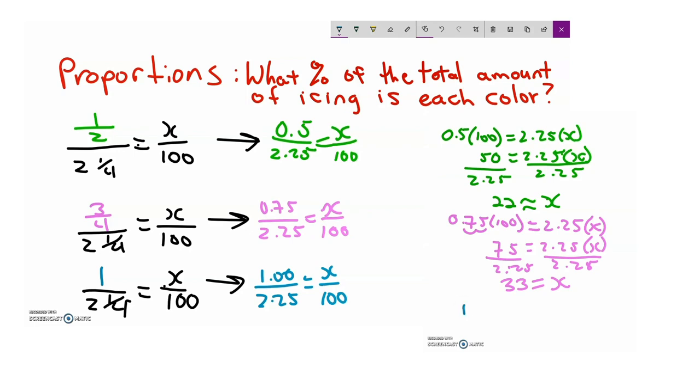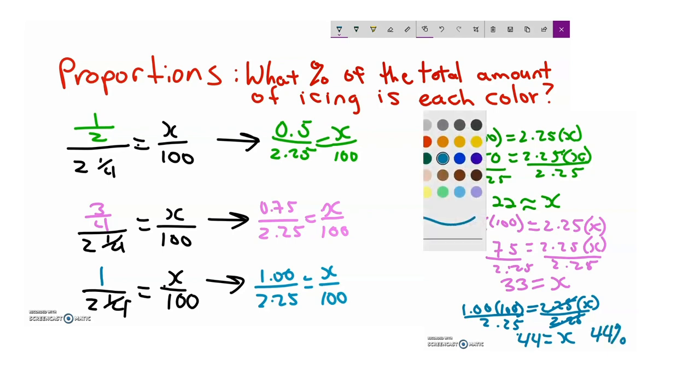And for the blue, we have the same sort of setup. 1.00 times 100 equals 2.25 times x. Once again, solving for x by dividing both sides by 2.25 here. I'm just going to cancel out the 2.25 so you can see what we're doing. 100 divided by 2.25 is going to give me 44. So 44 is equal to x for the blue frosting. So what we see is that this is the percent of frosting that is blue, 44%. And then again for the pink, 33% of the total frosting is pink. And the green, 22% of the total amount of frosting is green.